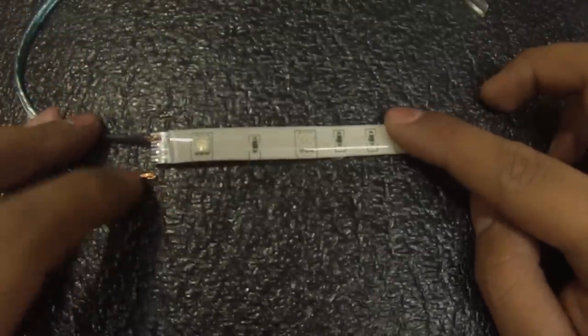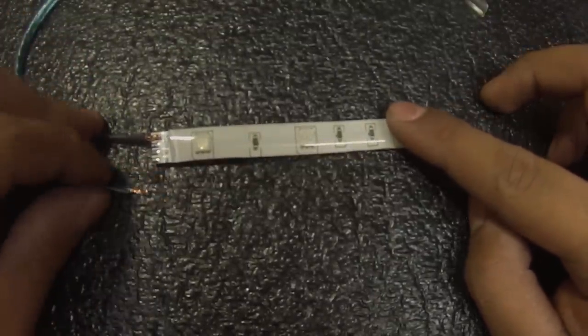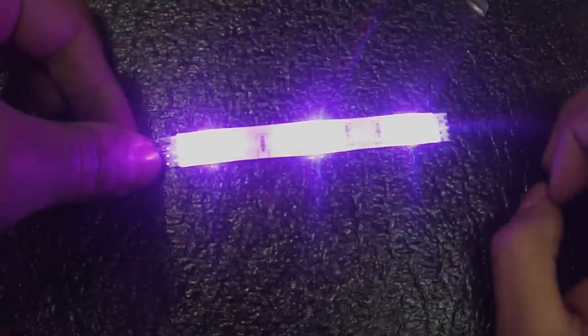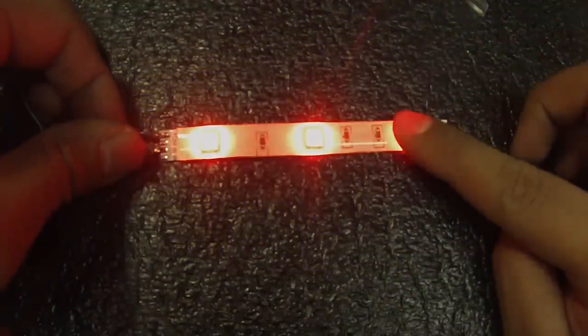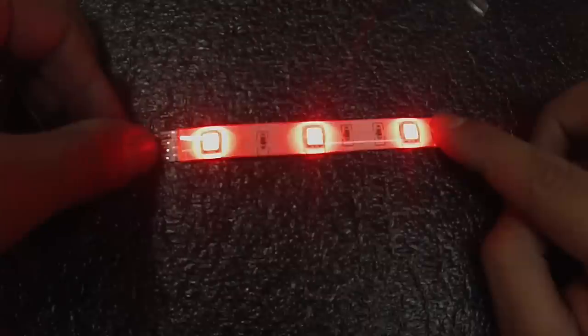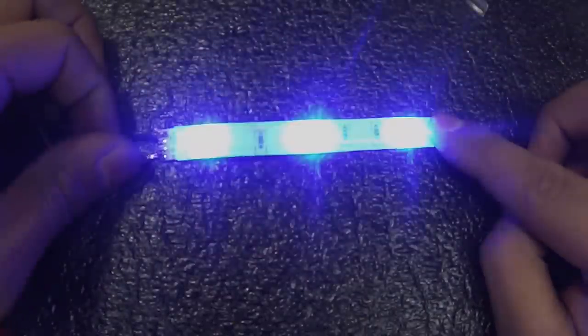You can mix and match. You can put let's say a red and blue together to make a purple like this. Pretty nice purple. Or a yellowish color which is red and green. Or just play around with it.